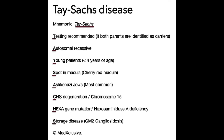So, how to remember this — the mnemonic is Tay-Sachs. T stands for testing: testing is recommended for future parents, given that both parents are identified as carriers. A stands for autosomal recessive.